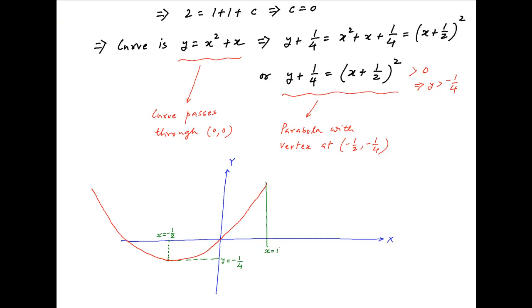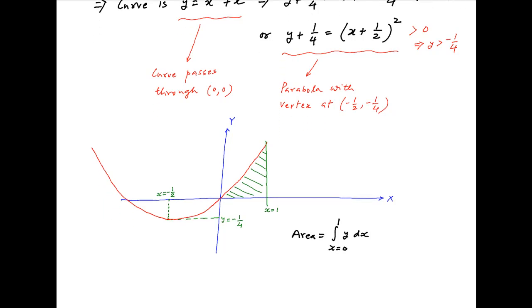The required area is bounded by this parabola, the x-axis, and the line x is equal to 1. Therefore the required area is equal to the integral of y dx where x varies from 0 to 1.